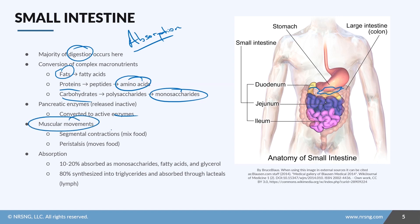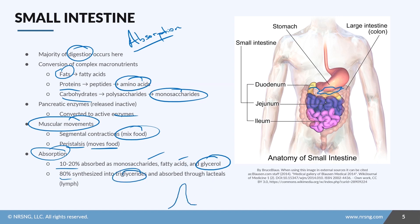There are both physical and chemical contributions to digestion in the small intestine: segmental contractions help to mix food, and peristalsis — that rhythmic contraction — moves food down the GI tract. Absorption is really important here: 10 to 20% of food is absorbed as monosaccharides, fatty acids, and glycerol. The other 80% is synthesized into triglycerides and absorbed through structures called lacteals — small ridges with a lymph structure and capillaries that help move things to the liver via the portal system.